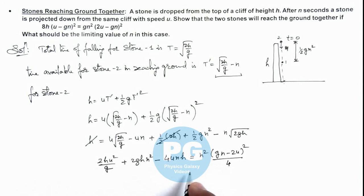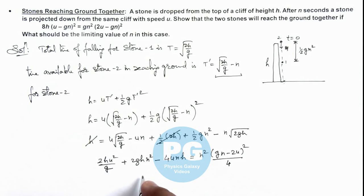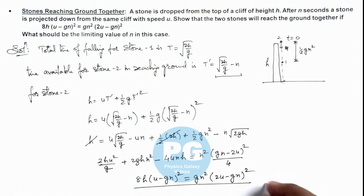And further, if we simplify this expression, we are getting what is given in the problem: 8h multiplied by u minus g n whole square is equal to g n square multiplied by 2u minus g n whole square. This is what we are required to prove.